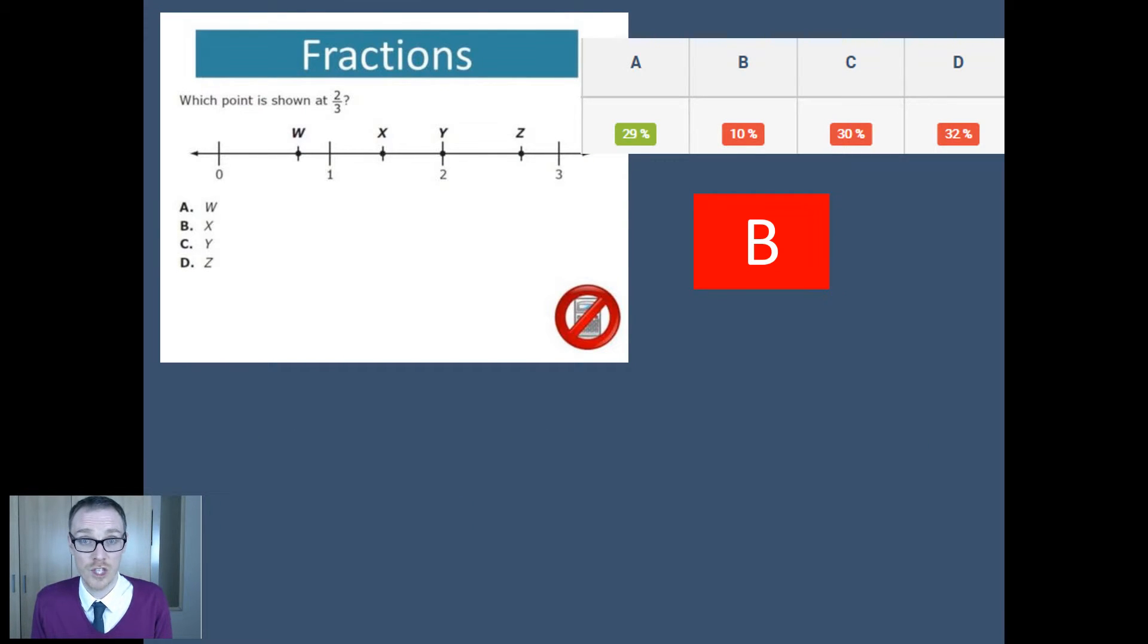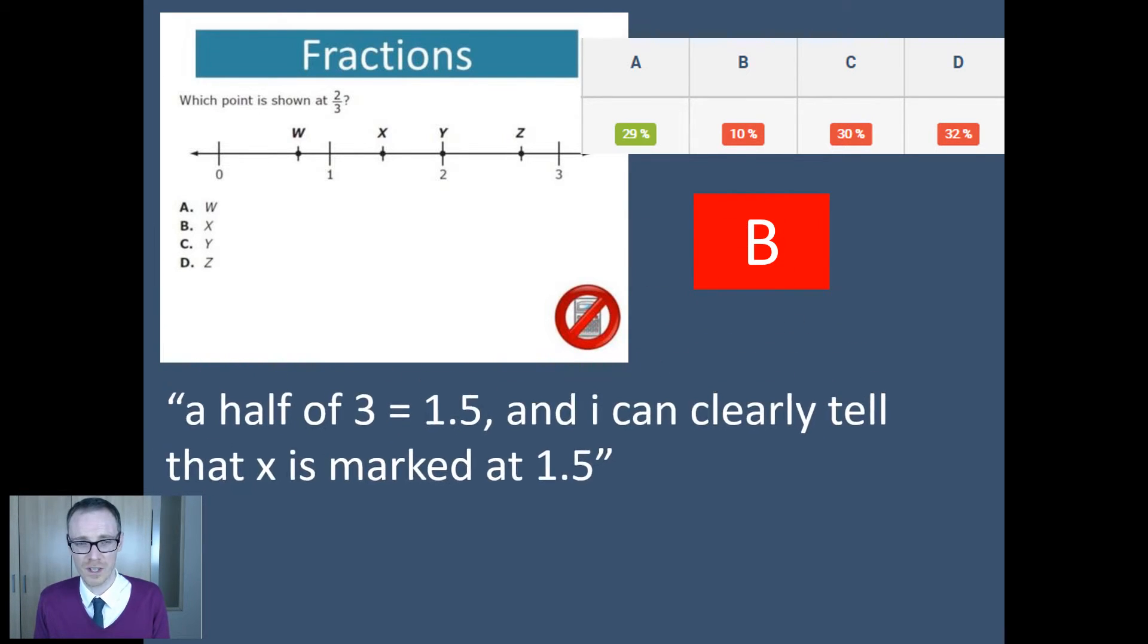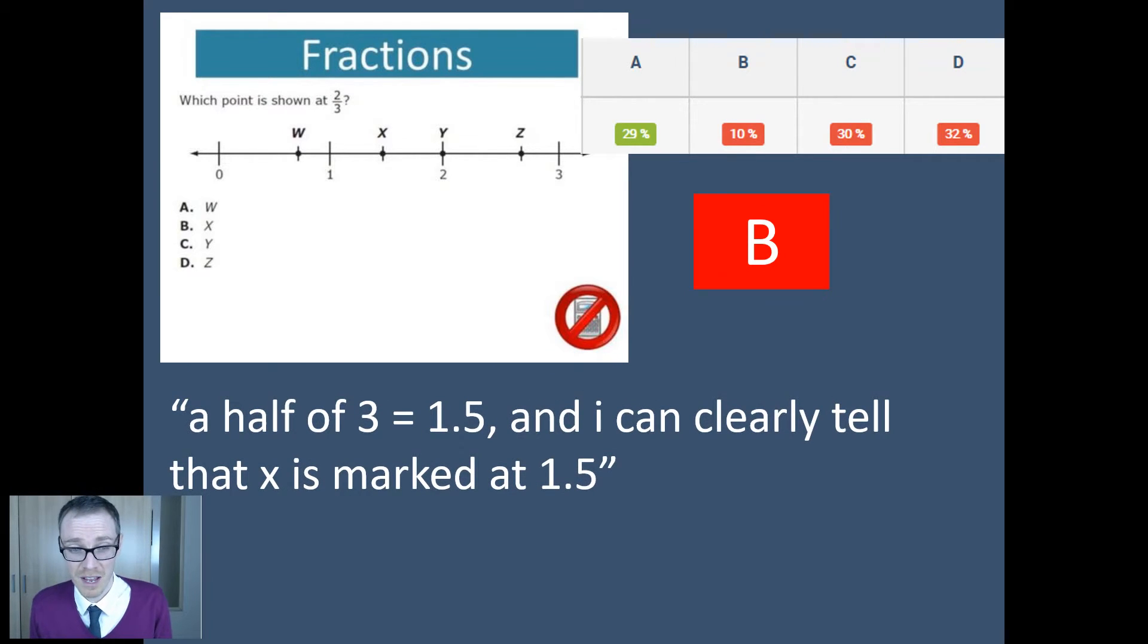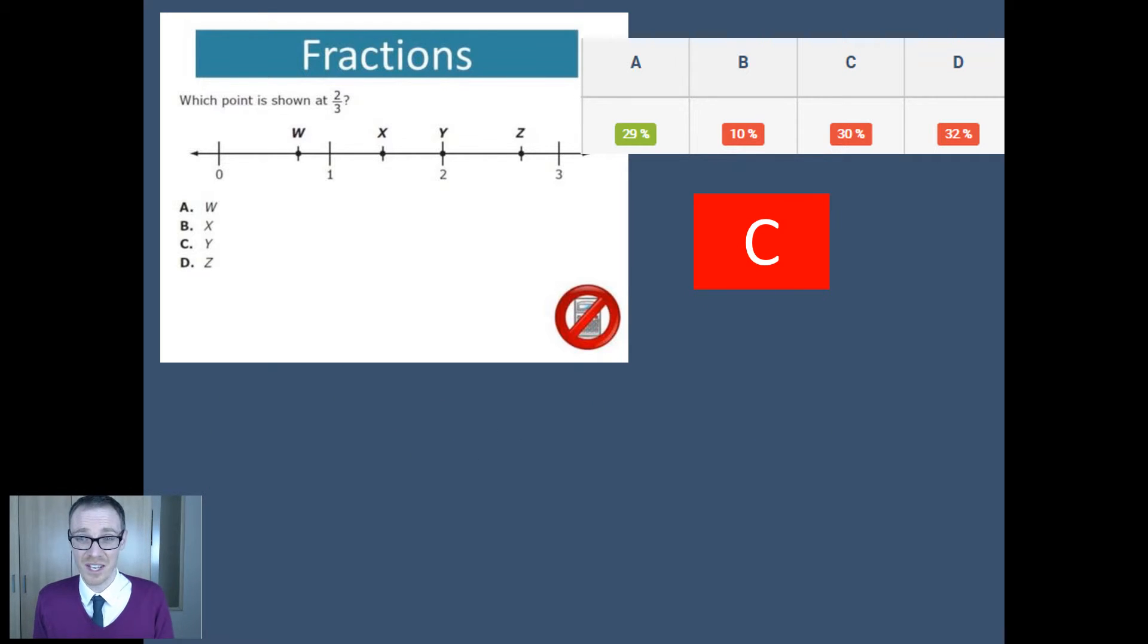So 10% went for B. B's at X, so between one and two. Why are they saying between one and two? A half of three is 1.5 and I can clearly tell that X is marked at 1.5. So we can see there that students are muddling up two-thirds probably with three over two, getting it the wrong way around. What about C? Why would they go for Y, which is at point two? I think the answer is C because there are three equal parts, so if you count the three lines it takes you to the letter Y.